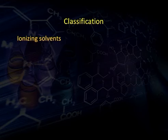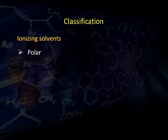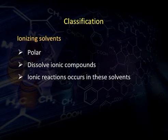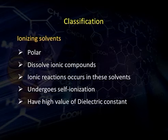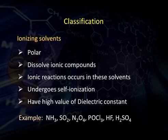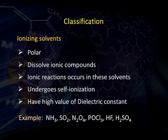The second classification is ionizing and non-ionizing solvents. Ionizing solvents are polar in nature, dissolve ionic compounds, ionic reactions occur in them, they undergo self-ionization or auto-ionization, and they have a high value of dielectric constant. Examples include ammonia, SO₂, N₂O₄, POCl₃, HF, and H₂SO₄.